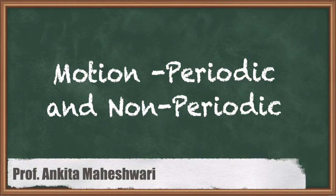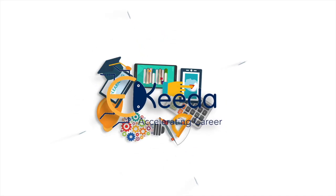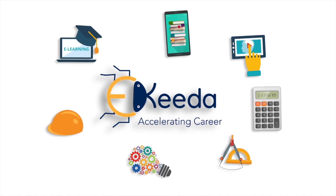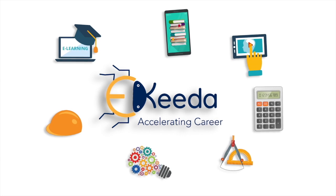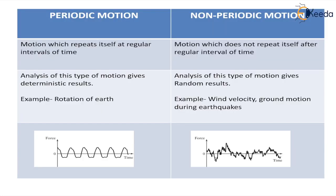Hello everyone. In this video we will discuss about periodic and non-periodic motion. Periodic motion is the motion which is repeating itself after regular or fixed intervals of time. For example, day and night, or maybe the rotation of the Earth. The motion is repeating itself and the time duration is fixed.